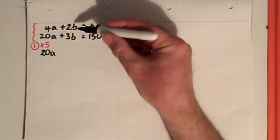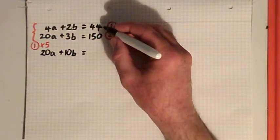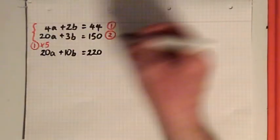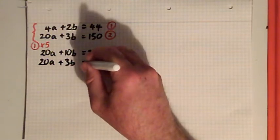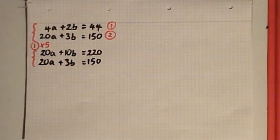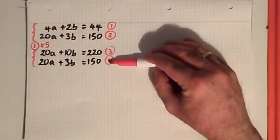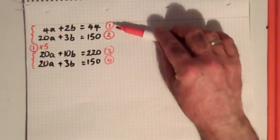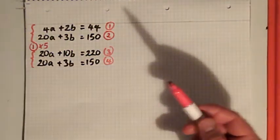And then I'm going to leave equation 2 as it is. So 20a + 3b = 150. I'm going to call them equation 3 and equation 4. Equation 4 is just the same as equation 2, and equation 3 is equation 1 multiplied by 5. Multiply it by 5 on the left, multiply it by 5 on the right, so everything should still balance.